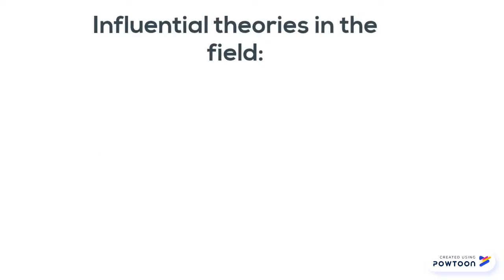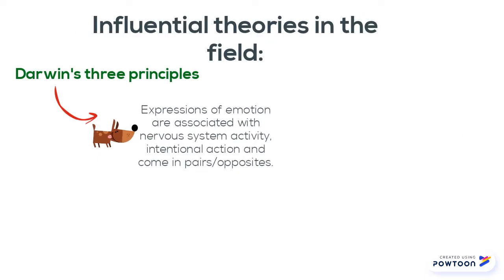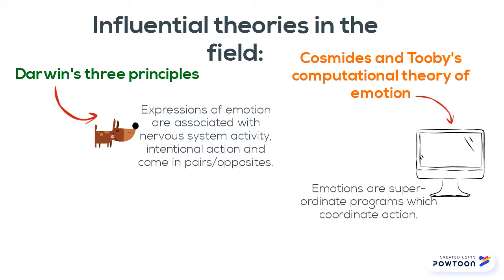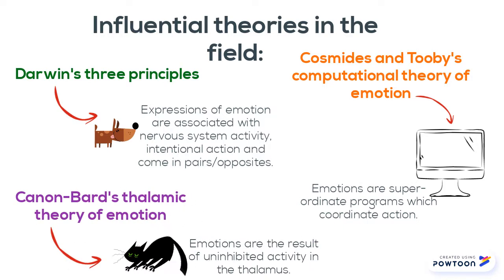Many more researchers have attempted to explain this relationship between evolution and emotion, some of which include Darwin's Three Principles of Emotional Expression, Cosmides and Tooby's Computational Theory, and Cannon and Bard's Thalamic Theory of Emotion.